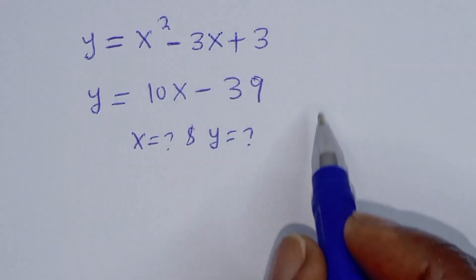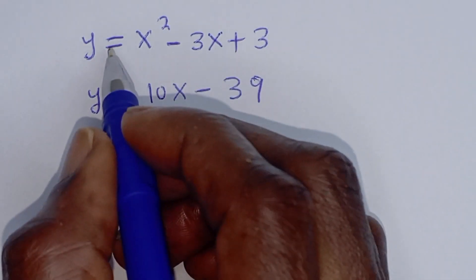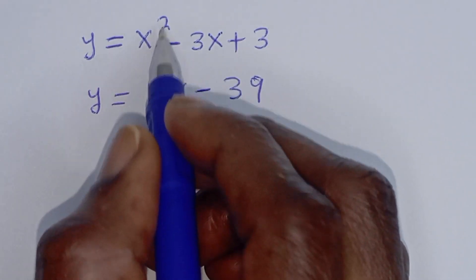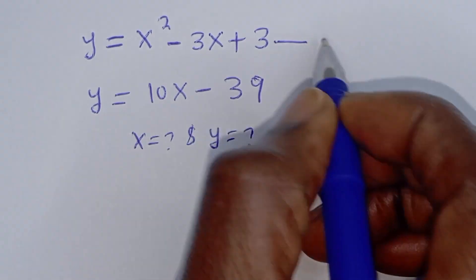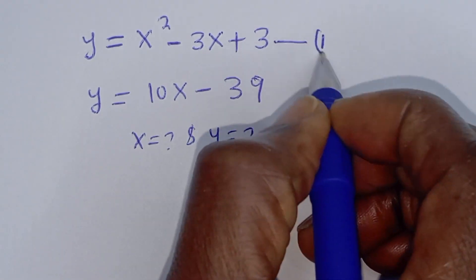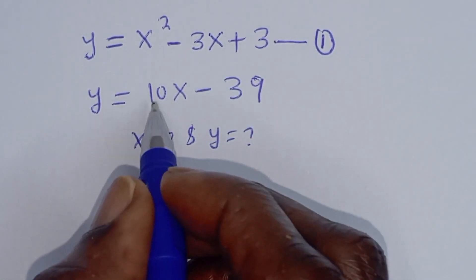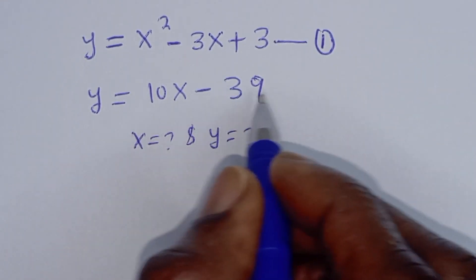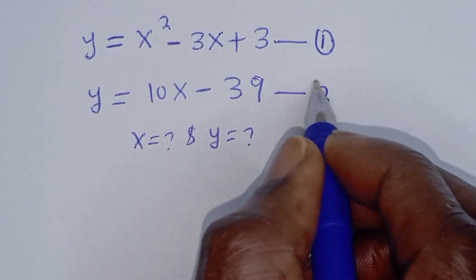From the first equation, Y is equal to S squared minus 3S plus 3 — this is equation 1. And Y is equal to 10S minus 39 — let's call this equation 2.